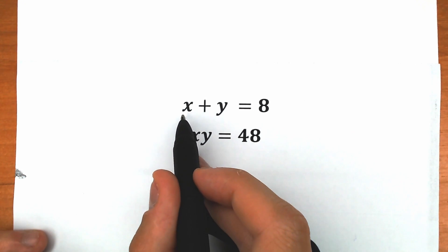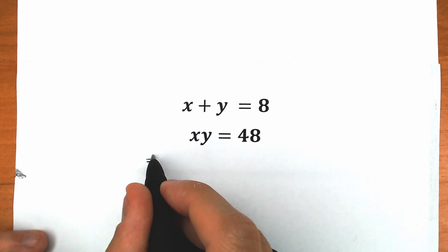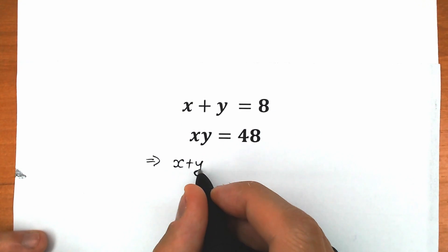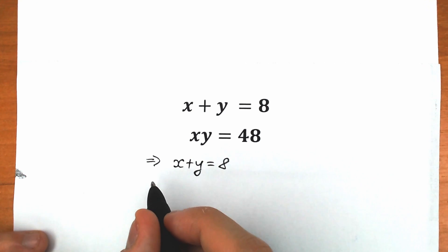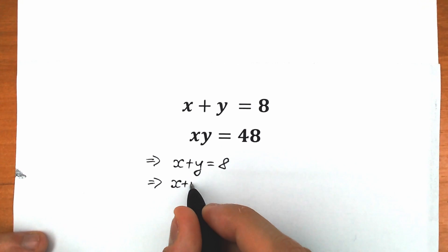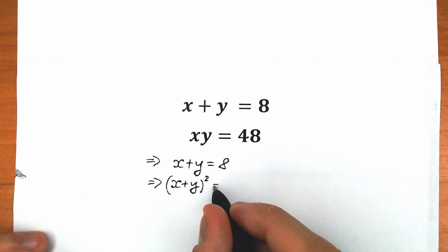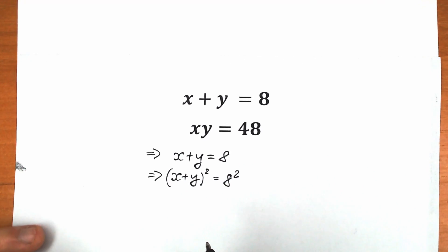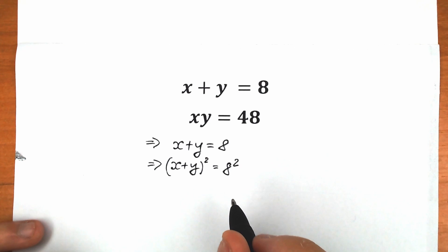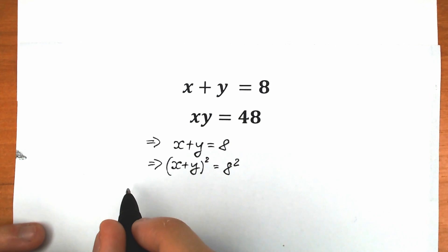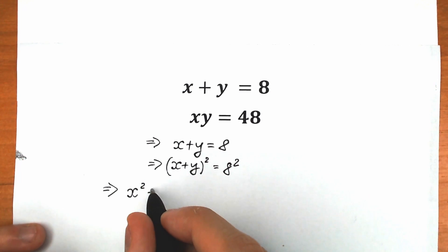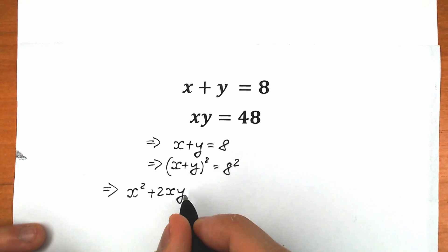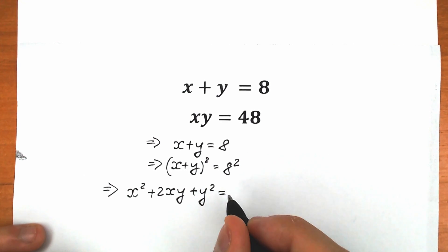First of all, let's rewrite our first equation right here. We have x plus y equals 8. Let's raise both sides — let's square both sides, raise both sides to the second power. So we have (x plus y) squared equals 8 squared. 8 squared equals 64. So we get x squared plus 2xy plus y squared equals 64.